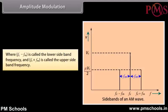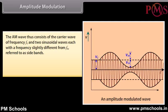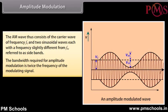Here, (ωc − ωm) is called the lower sideband frequency and (ωc + ωm) is called the upper sideband frequency. The AM wave thus consists of the carrier wave of frequency ωc and two sinusoidal waves each with a frequency slightly different from ωc, referred to as sidebands. The bandwidth required for amplitude modulation is twice the frequency of the modulating signal.